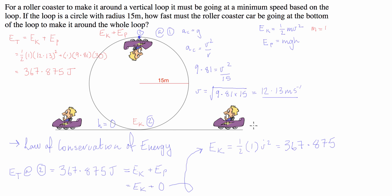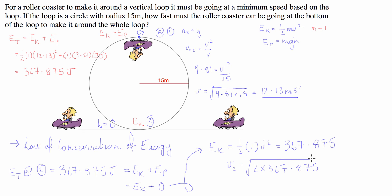So we set the kinetic energy equal to 367.875: one half times mass (which is 1) times velocity squared equals 367.875. We multiply both sides by 2, and find that the velocity at Point 2 equals the square root of 2 times 367.875, which gives us 27.12 metres per second.